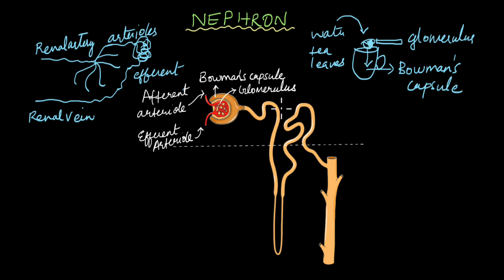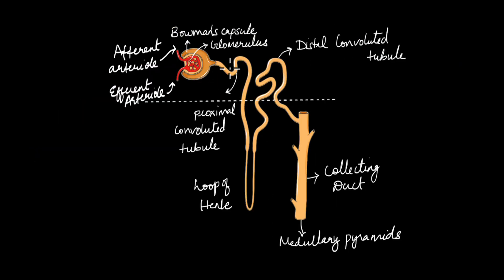This region of the nephron — the glomerulus together with Bowman's capsule — is known as the renal corpuscle. Beyond this, the nephron extends as a tubular structure that is slightly coiled. This slightly coiled structure is known as the proximal convoluted tubule. We'll talk more about the function of the glomerulus and these tubules in later videos. The proximal convoluted tubule then goes down as the loop of Henle and comes back up again.